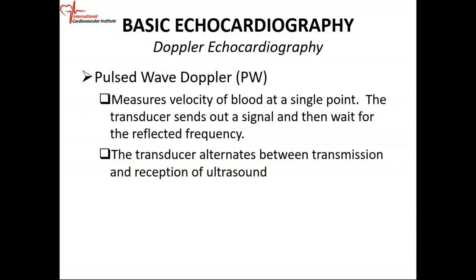Pulse wave Doppler measures low velocity. When you have your probe or transducer, it sends out an impulse, a sound wave, and then it does nothing — you wait for the reflection of that sound wave to come back. When the sound wave travels to any structure, it impinges on that structure and bounces back towards the transducer, and you get your Doppler signal. Pulse wave Doppler measures velocity of blood at a single point.